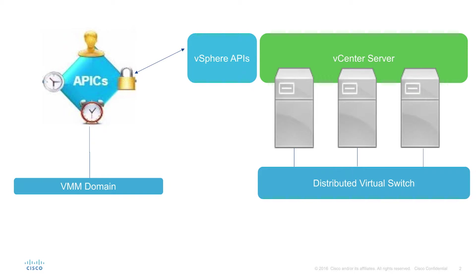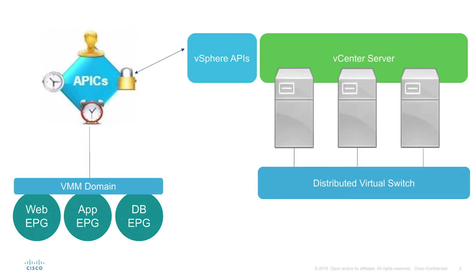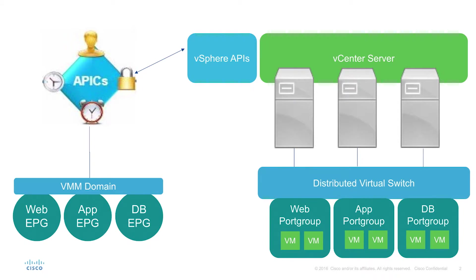Once hosts, or really vNICs, are added to the DVS, you can then start creating endpoint groups in the APIC and specify that they're attached to the VMM domain. This will automatically create corresponding port groups in vCenter.